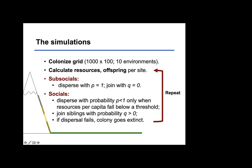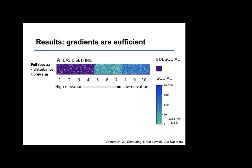We calculate resources available and offspring produced at each occupied site; offspring recolonize the grid, the parental generation dies, and we repeat until equilibrium — reached in fewer than 100 generations, though we ran simulations for 1,000 generations. At equilibrium, we observe that higher-elevation habitat is occupied by sub-social species (purple), intermediate elevations show a mixture of social systems, and the largest colonies occur in the lowland rainforest — replicating exactly the pattern observed in the actual system.